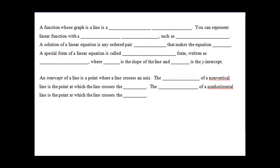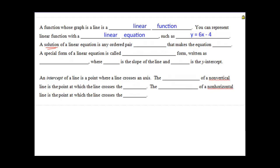A function whose graph is a line is called a linear function. We can represent any linear function with a linear equation, such as y equals 6x minus 4. Anything we call a solution is any ordered pair — x comma y — that if we plug it in for x and y, it'll make the statement true. For example, the point (2, 8): plugging in gives 8 equals 6 times 2, which is 12, minus 4 equals 8. So that is a solution.